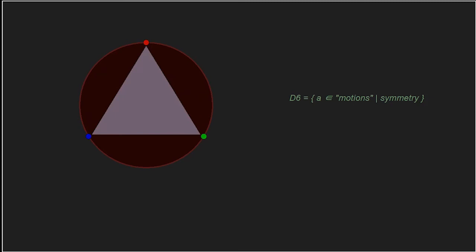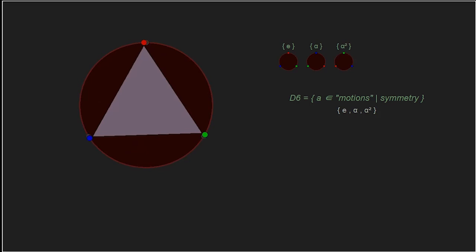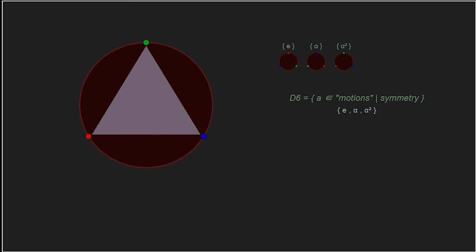Our set of elements are all the rotations or reflections we can perform on this triangle such that, without our markers, the triangle would appear in the same original position. The first element is the identity element — simply do nothing — and we'll call that e. The second element is a rotation of 120 degrees clockwise; let's call that alpha. The third element is another 120-degree rotation, equivalent to rotating the original triangle 240 degrees clockwise, so let's call that alpha squared. Rotating 360 degrees brings us back to the original position, which is the identity. Any counterclockwise rotation also lands on the same position as alpha or alpha squared.